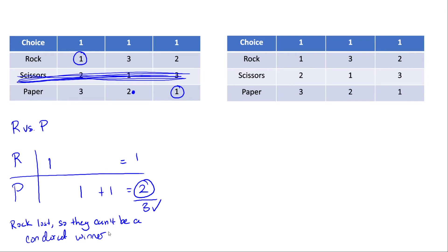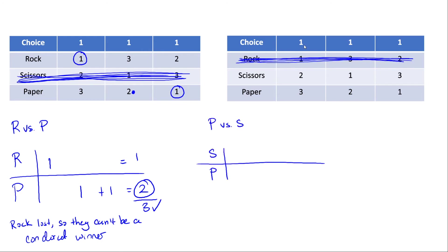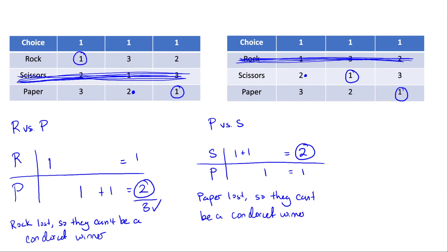Now for the last head-to-head comparison: we've seen Paper win but not lose yet. To show Paper can't be a Condorcet winner, we put Paper against Scissors. One voter chooses between their second and third choice and picks their second choice, one voter has their first choice there, and one voter has their first choice still there. Scissors ends up getting two votes, Paper gets one, and Scissors wins — so Paper loses. In the end, there is no Condorcet winner because each candidate lost at least one head-to-head comparison.